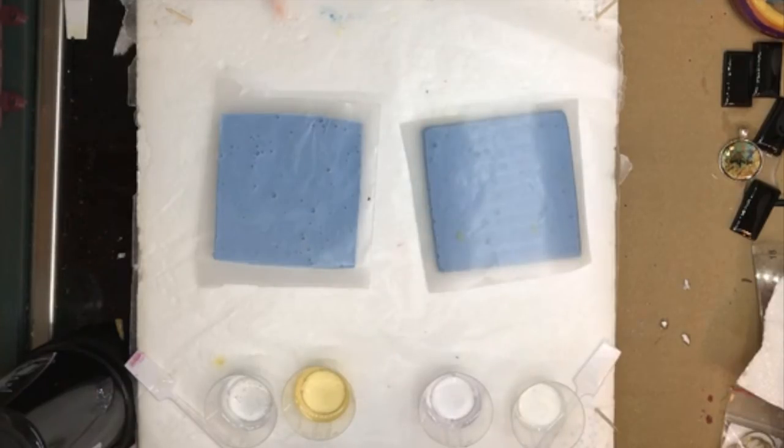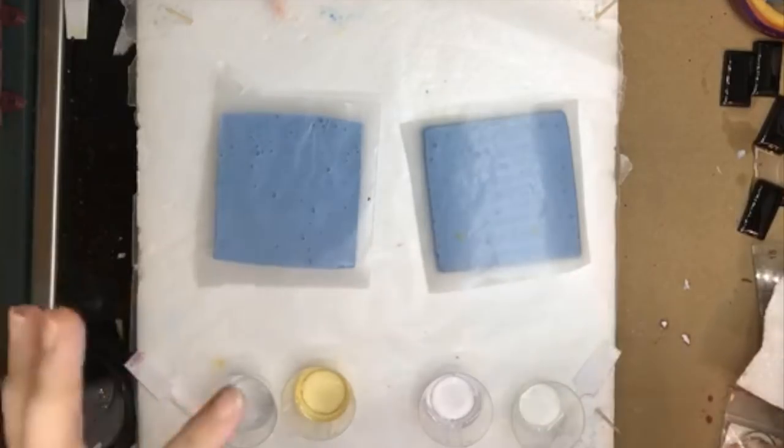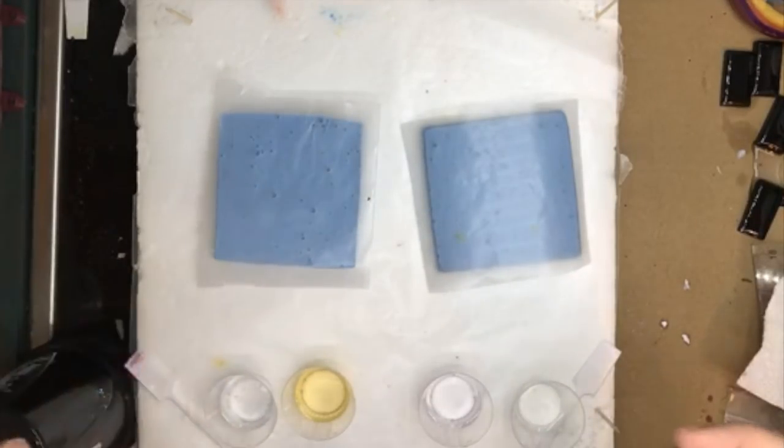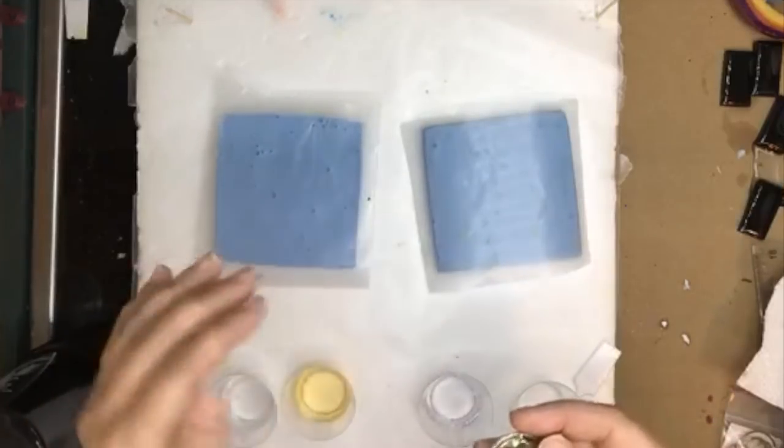The reason this is important is because depending on what project you want to do or you want to make, you need to be sure to choose the right resin for your project so that you can get what you want accomplished. So just a couple basic concepts here. A doming resin is one that mixes thick enough that when you put it on a surface or put it into something, it's going to have a dome over the top.